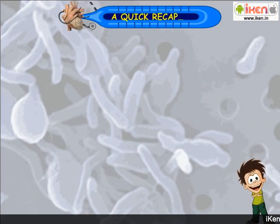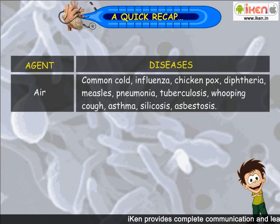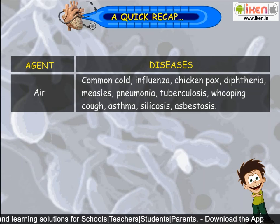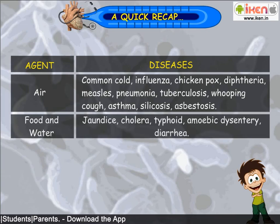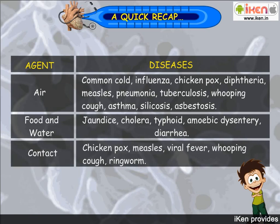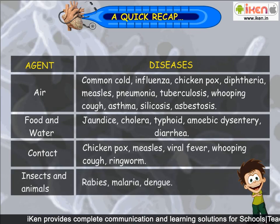Let us do a quick recap. Diseases caused by air are common cold, influenza, chickenpox, diphtheria, measles, pneumonia, tuberculosis, whooping cough, asthma, silicosis and asbestosis. Diseases caused due to food and water are jaundice, cholera, typhoid, amoebic dysentery and diarrhea. Diseases caused due to contact are chickenpox, measles, viral fever, whooping cough and ringworm. Diseases caused due to insects and animals are rabies, malaria and dengue.